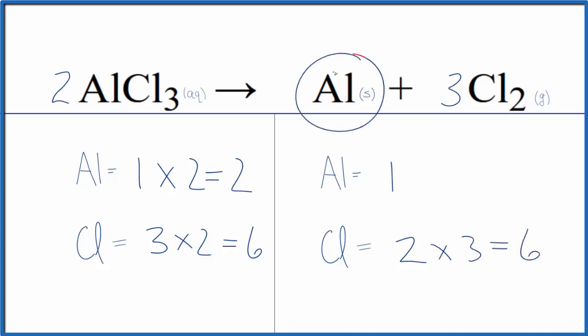And aluminum is by itself. We change this. It won't change anything else. We'll just put a two here. Then the one times two, that gives us two. That's balanced.